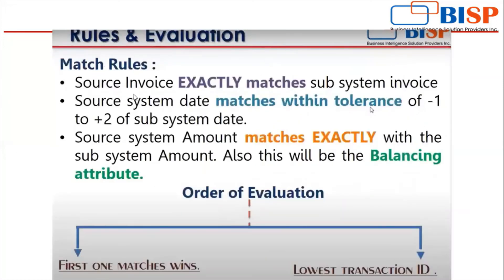For rules and evaluation: an exact match rule means source invoice exactly matches subsystem invoice. There is also a tolerance rule — for example, source system date matches within a tolerance of minus one to plus two days of the subsystem date, so a date of January 3rd would match from January 2nd to January 5th. Amount always uses exact match and is the balancing attribute.